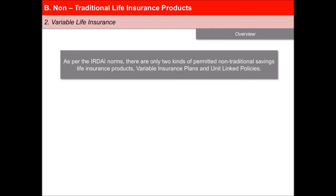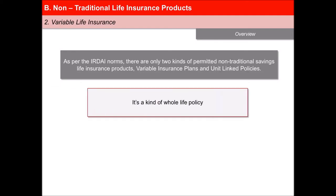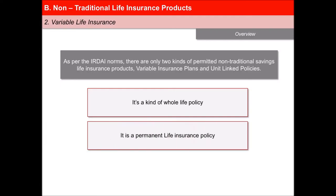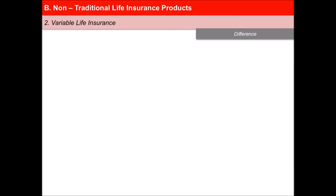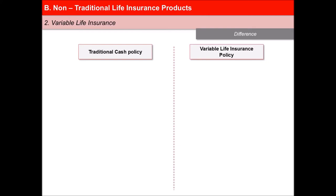Let us first look at variable life insurance. Variable life insurance is a kind of whole-life policy. This policy was first introduced in the United States in 1977. It is a permanent life insurance policy where premium payments are fixed.